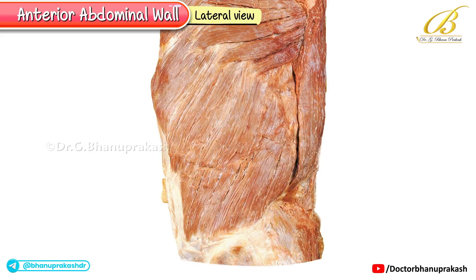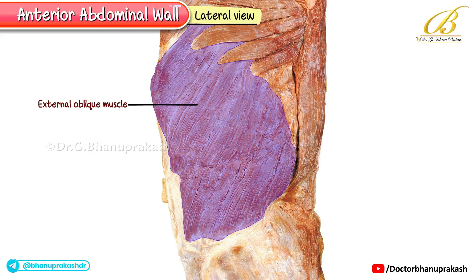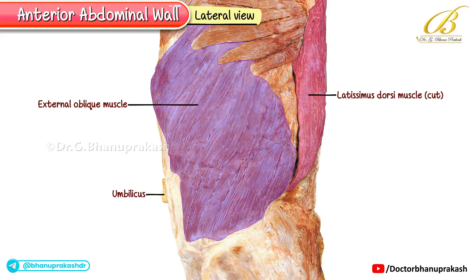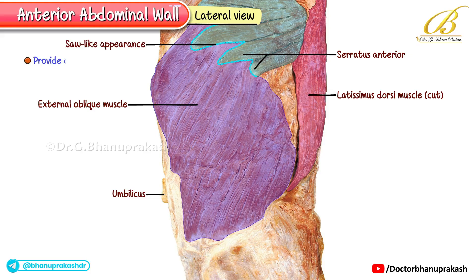Now let's move to this lateral view where the external oblique muscle can be seen much more clearly. Notice that the umbilicus is positioned anteriorly, while at the back a portion of the latissimus dorsi muscle is also visible. One striking feature in this view is the interdigitation of the external oblique with the serratus anterior muscle at its origin. This interlocking arrangement gives a saw-like appearance, and it helps in providing additional strength to the chest and abdominal wall.